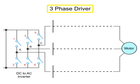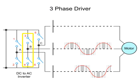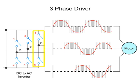In a three-phase drive, the sine waves produced by each pair of inverter switches are 120 degrees out of phase to ensure efficient operation of the motor.